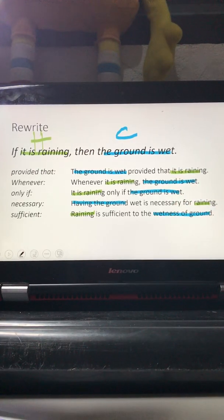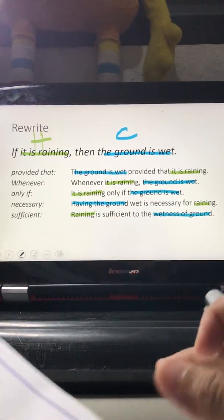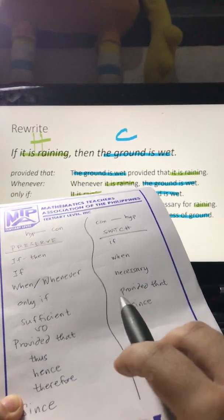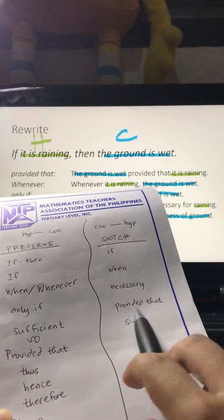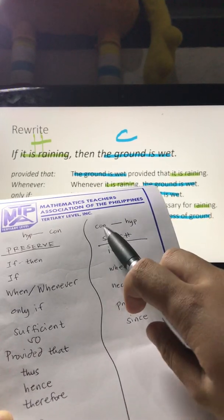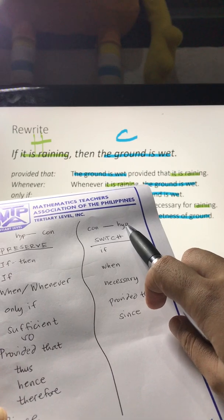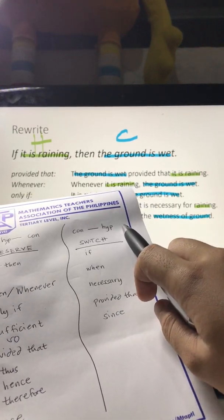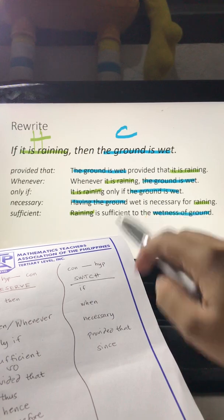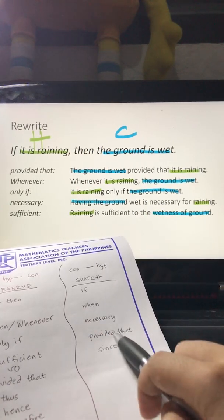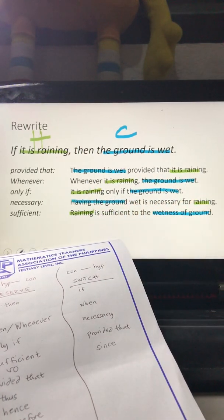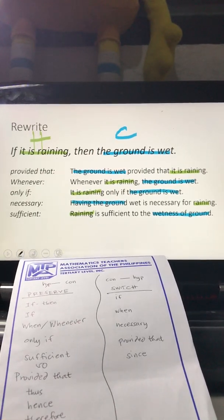Next is 'provided that,' which appears in the middle of a statement and falls under the switch category. This means conclusion comes first, then the phrase 'provided that,' followed by the hypothesis. The pattern is: conclusion provided that hypothesis.